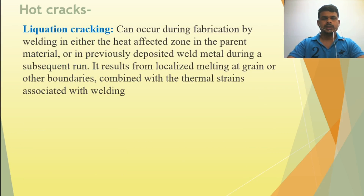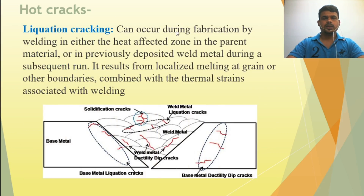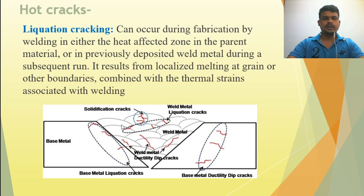Liquidation cracks can occur during welding fabrication in either the heat-affected zone of the parent material or in previously deposited weld metal during a subsequent run. They result from localized melting at grain or other boundaries combined with the thermal strain associated with welding. The heat-affected zone area can exhibit liquidation cracks, and previously deposited weld metal from a first pass can also show liquidation cracks during a subsequent run. The centerline of the weld may also show solidification cracks.